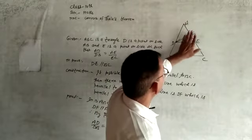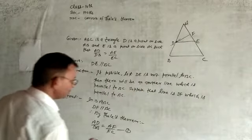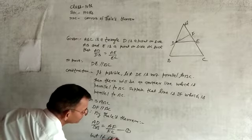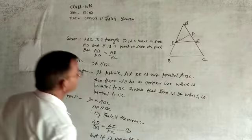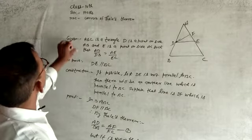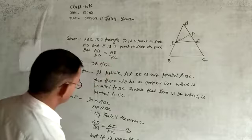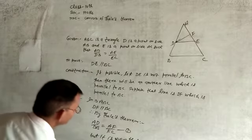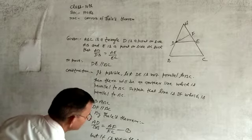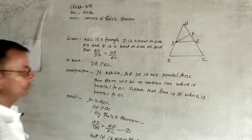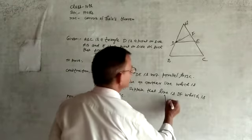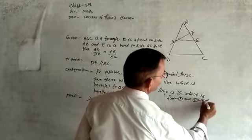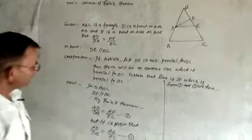Using the Thales theorem, AD upon DB equals AF by FC — this is equation 1. It is also given that AD by DB equals AE by EC — this is equation 2. From equations 1 and 2, we have the left-hand sides are equal.